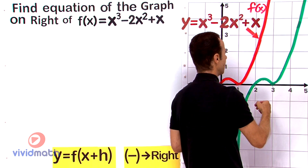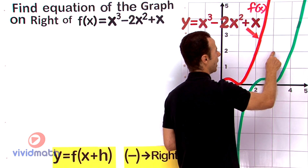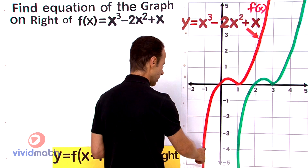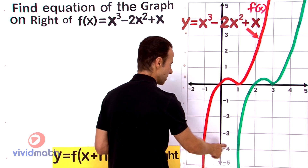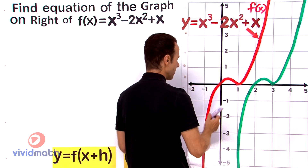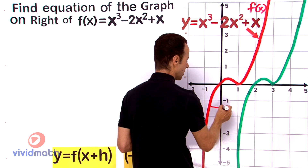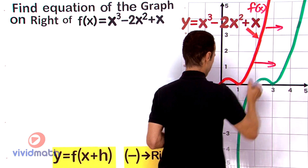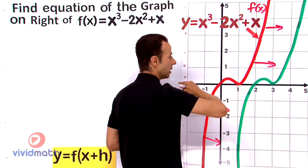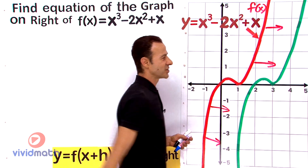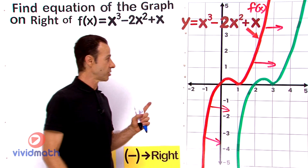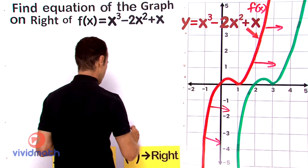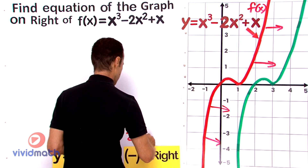Let me verify with another point - 1, 2, two units to the right. And another point over here - 1, 2, two units to the right. So that confirms we are moving horizontally along the x-axis 2 units to the right.